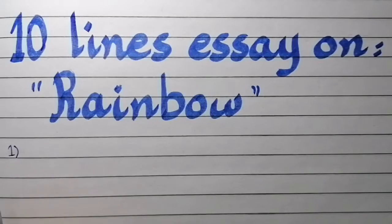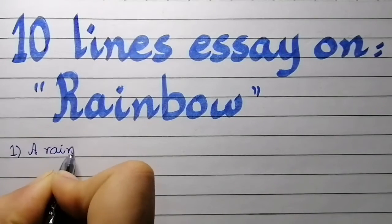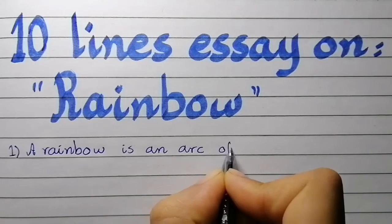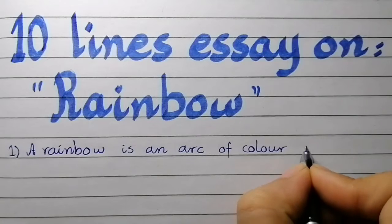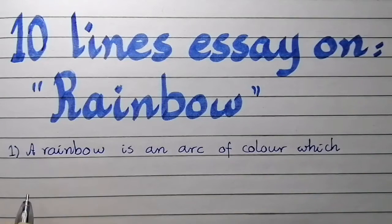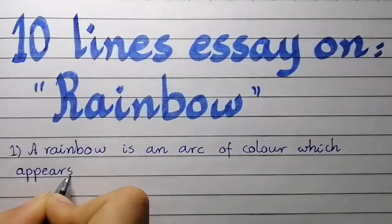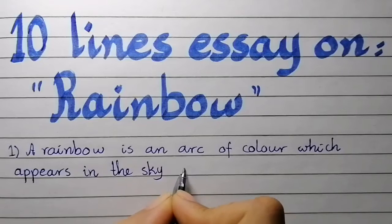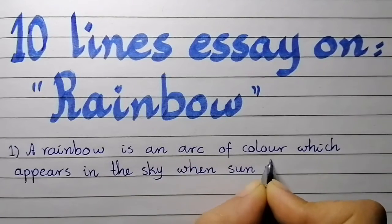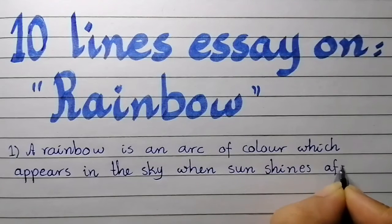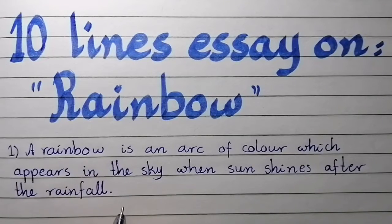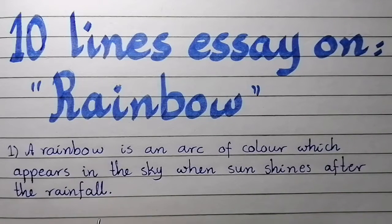Point number one: a rainbow is an arc of color which appears in the sky when the sun shines after the rain falls.